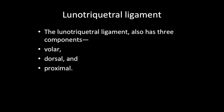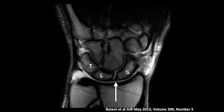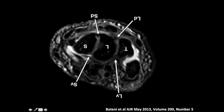The lunotriquetral ligament also has three components: a volar, dorsal, and proximal component. This is a coronal image showing the scapholunate ligament between the scaphoid and the lunate — we feel we see these best on axial images. In this image we have the scaphoid and the lunate, and traveling along the dorsal aspect of the scapholunate interval we see the very thick dorsal component of the interosseous scapholunate ligament. Along the volar aspect we see the volar component. We also see between the lunate and triquetrum both the dorsal and volar components of the interosseous lunotriquetral ligament.